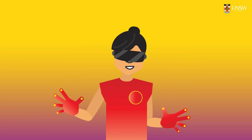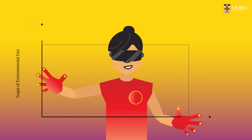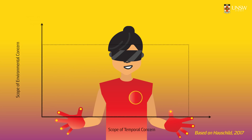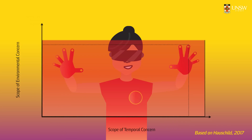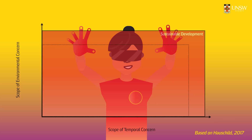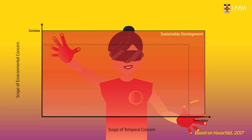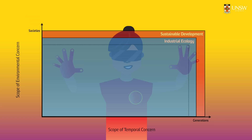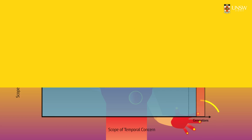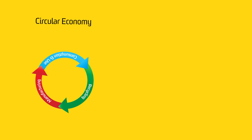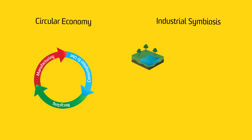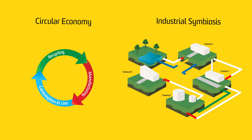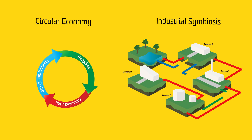The framework has two main dimensions: the scope of environmental concern and the scope of temporal concern, represented on the Y and X axes, respectively. Sustainable development can be represented in this graph as an overarching platform with a focus on societies on the environmental scale and human generations on the temporal scale. For instance, industrial ecology as a discipline can be represented within the scope of economies and human generations. In this context, concepts such as the circular economy and industrial symbiosis are also represented at this level. However, these are all top-down concepts, and although they are relevant, it is not the core function of what industrial organizations do as part of their operations.